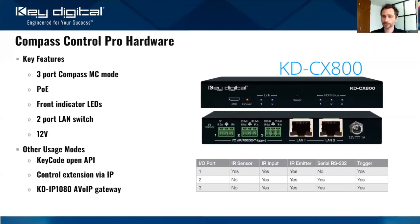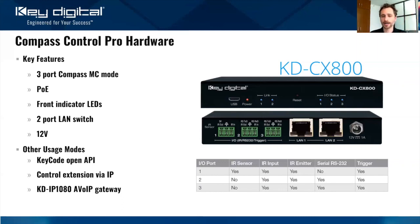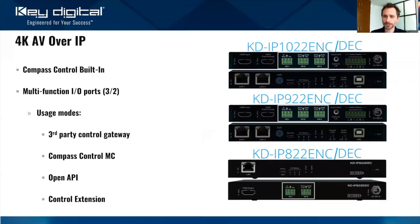The CX800 also has an open API, so you can talk to it from a third-party control system, sending an IP string that converts to IR or RS-232. We also use it as an AV over IP control interface. Speaking of AV over IP: we build essentially what is a CX800 into all of our 4K AV over IP products. The 822 has two IO ports; the 922 and 1022 have three IO ports each.